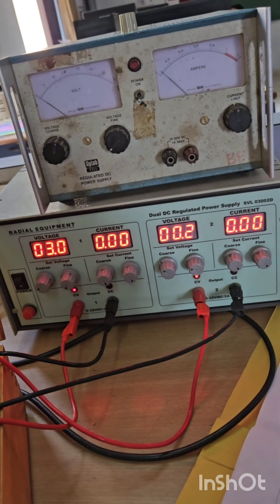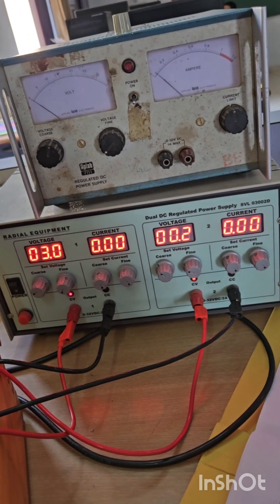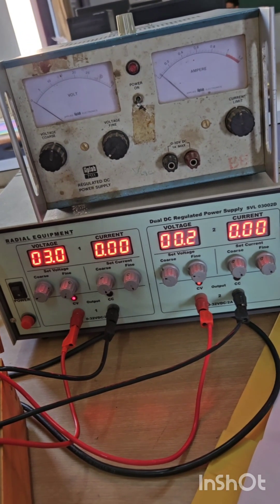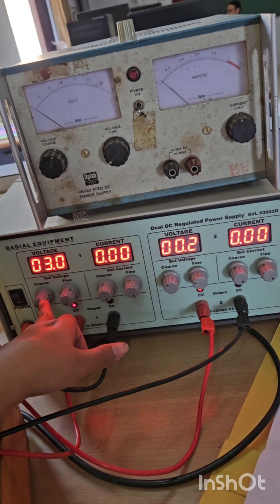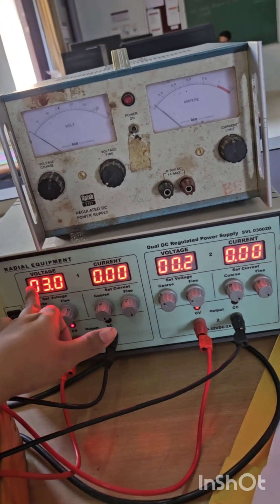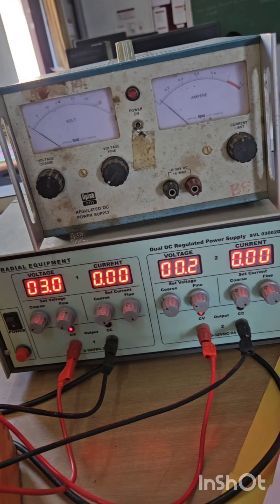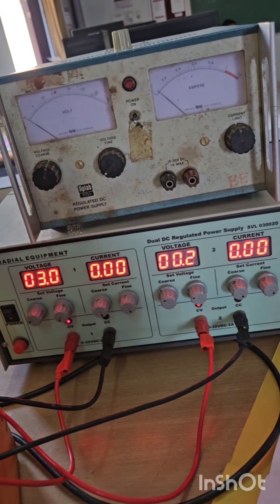When taking the values of ID for VGS2 and VGS3, set VDS to 0 before setting these values of VGS, which we are setting at 3.2 and 3.4.